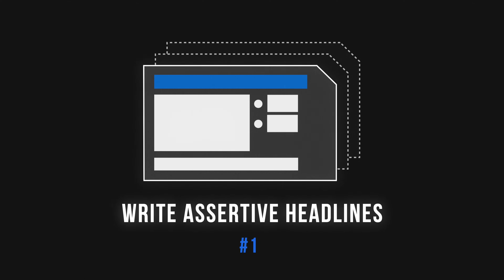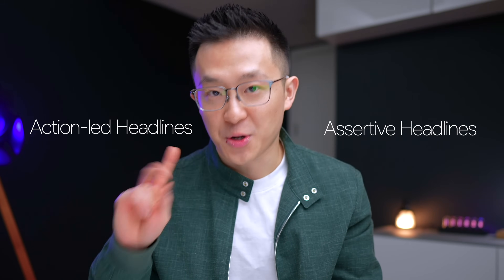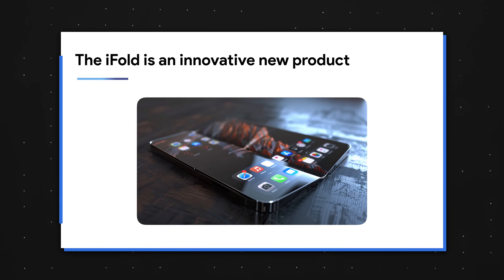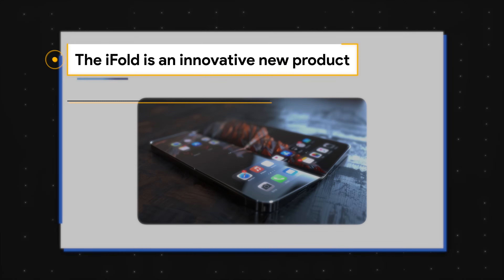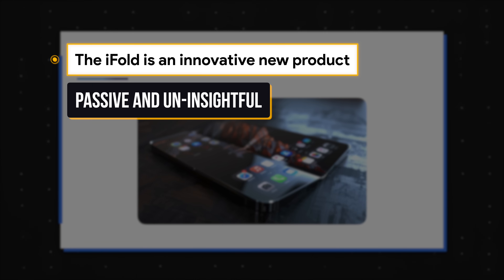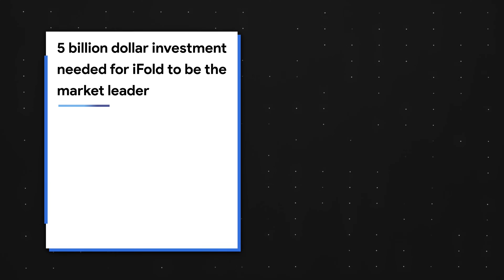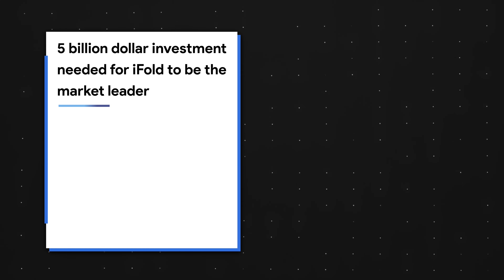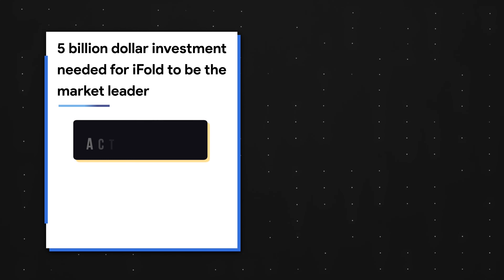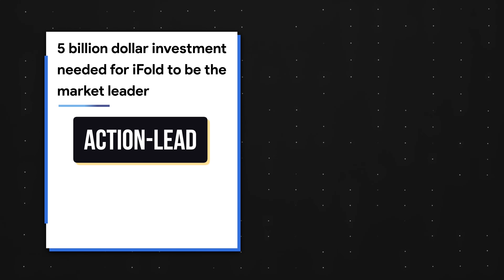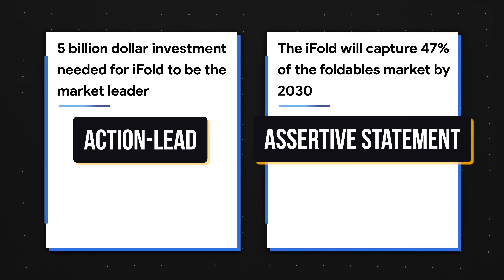Harn states the best headlines fall into one of two categories: action-led and assertive. For example, 'The iFold is an innovative new product' is passive and uninsightful — who would ever argue that a new product is not innovative? Compare that to '$5 billion investment needed for iFold to be the market leader' — that's action-led. And 'The iFold will capture 47% of the photo bulls market by 2030' is an assertive statement.